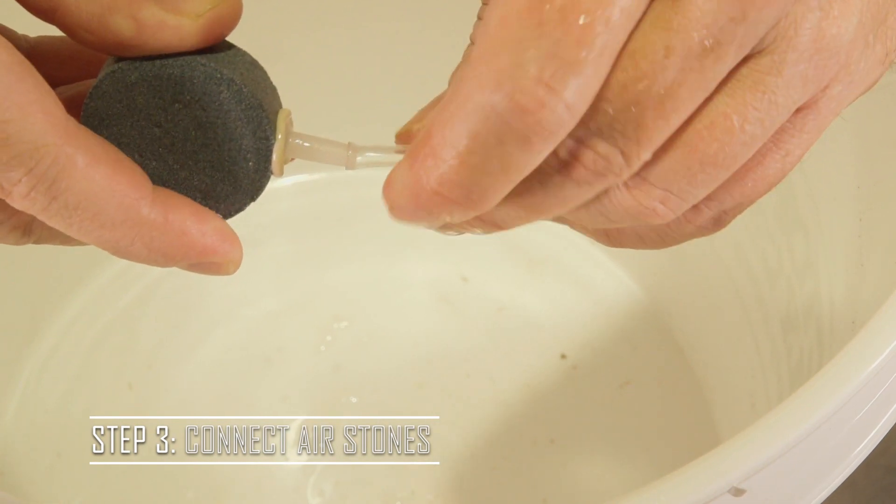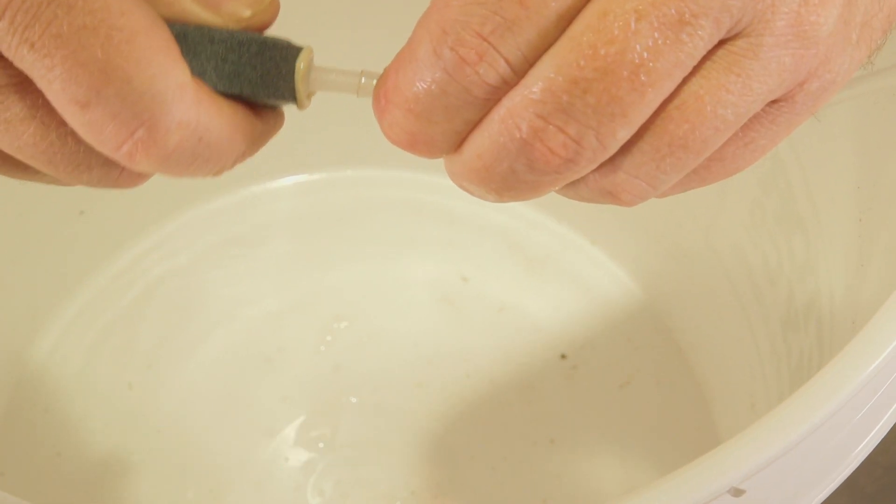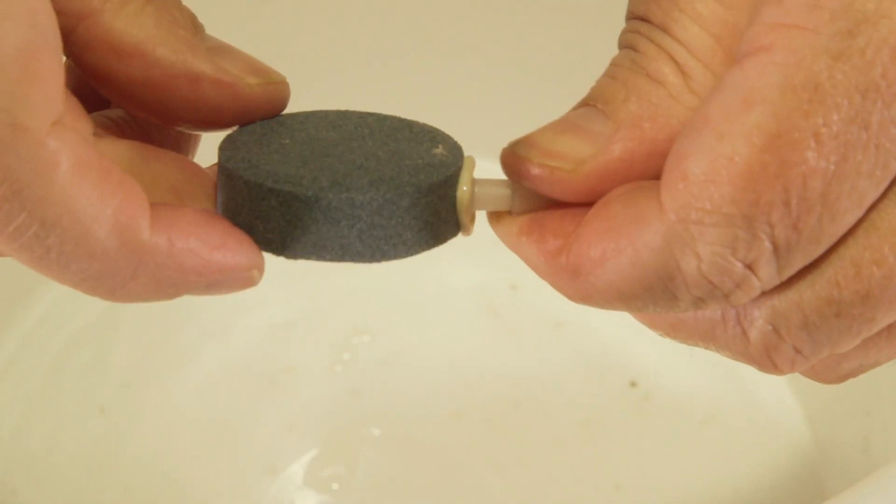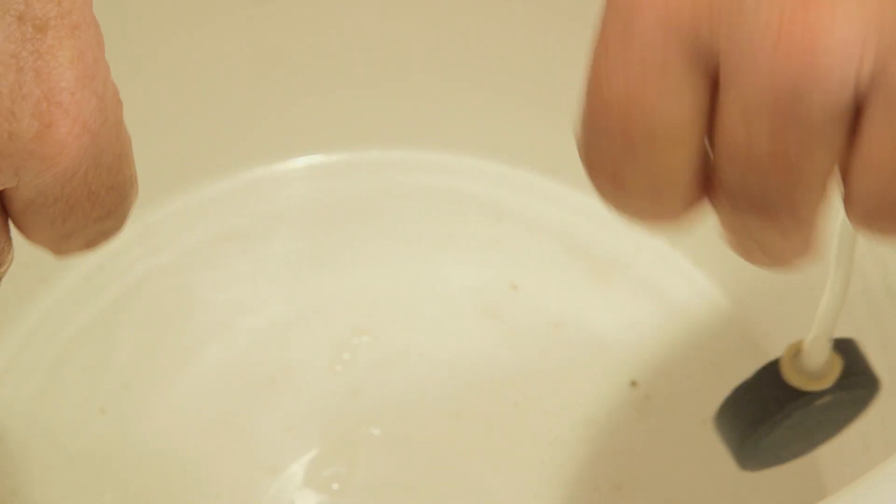All right, and so once you have your air holes in, you're going to be able to put the air line through there and then attach on the inside of the buckets or the containers, the air stones. And those air stones are now soaked.